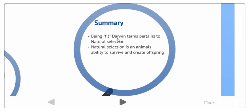In summary, being fit, in Darwin terms, pertains to natural selection. And natural selection is an animal's ability to survive and create offspring.